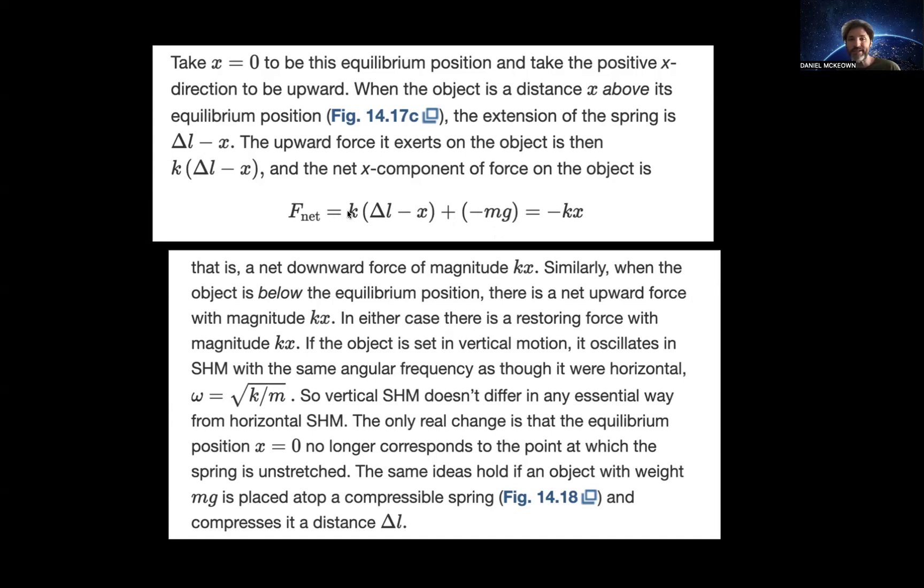But then what happens is this displacement from equilibrium plus the gravitational term, that's equal to minus KX. Because if you distribute this, you'll see that K times delta L is equal to minus mg. And then we have K times minus X. So K times minus X equals minus KX. So that's the new way to define minus KX when we have displacement due to gravity, when we have vertical oscillations.